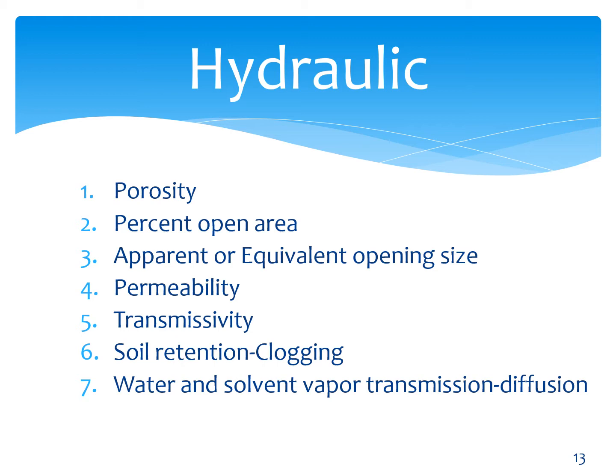Hydraulic properties include porosity, percent open area, apparent opening or equivalent opening sizes, permeability, and transmissivity. Permeability is cross-plane flow; transmissivity is flow in the plane. Also included are soil retention or clogging, and water and solvent vapor transmission — this is becoming very important, particularly in the containment industry where you're containing VOCs or methane.